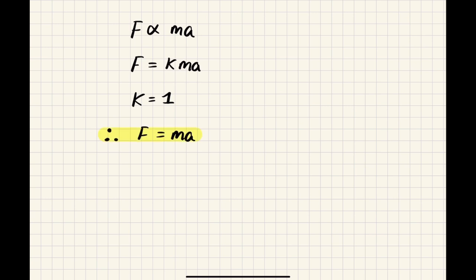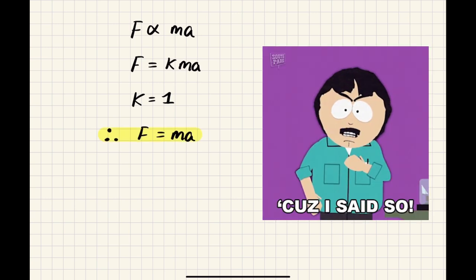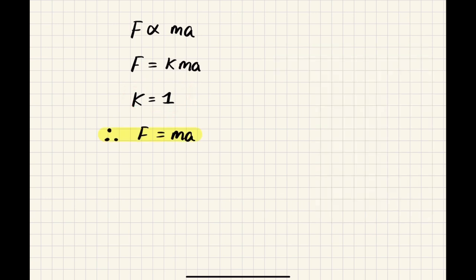Now, the thing is, why is K one? Well, it actually just is. It's called Newtonian mechanics. So in day to day mechanics, it is just one.